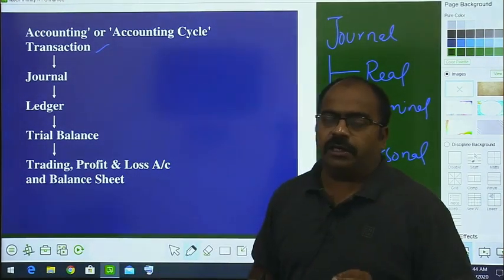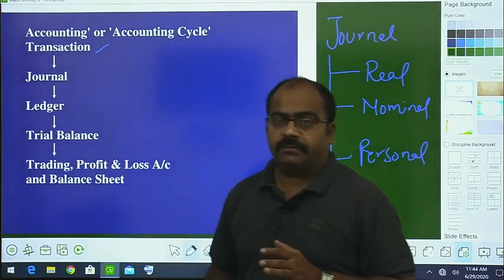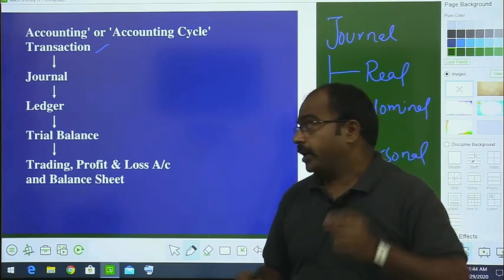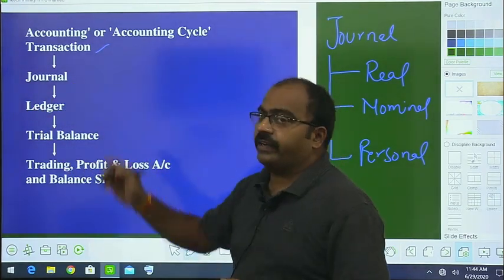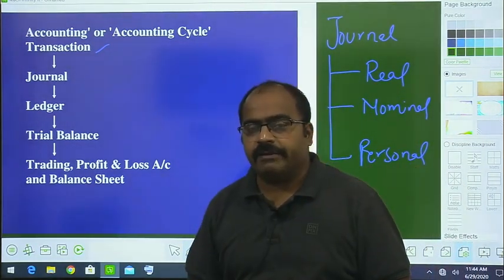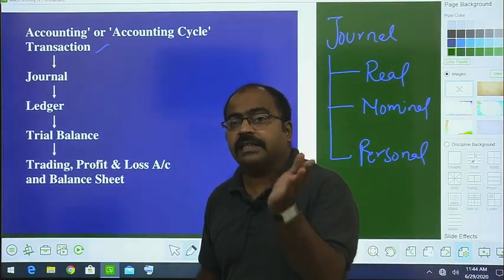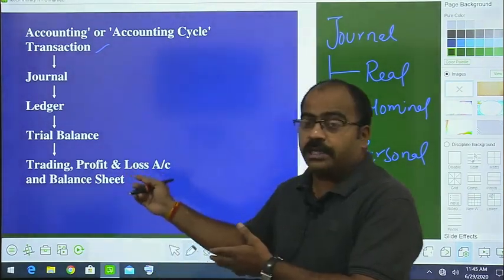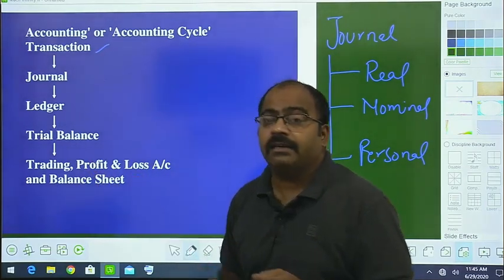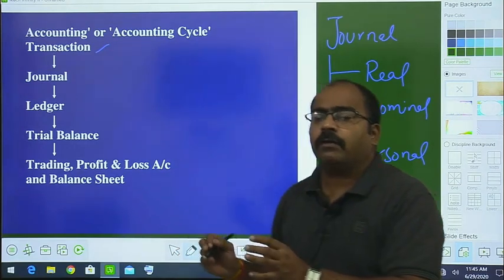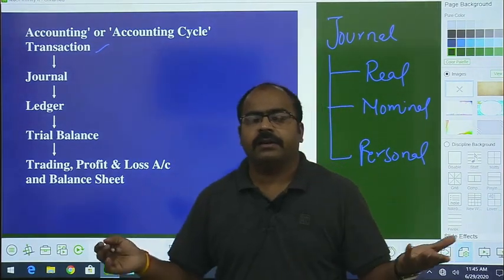On the basis of real, nominal, and personal rules, we do the entire journalizing — the base stage entries. After completing the journal, we create head-wise accounts called the ledger. Ledger means classifying — we classify under different heads: this is an expense, this is income, this goes under wages, this under salary. Then we prepare the trial balance, and finally trading profit and loss account and balance sheet — that is the end result of accounting.